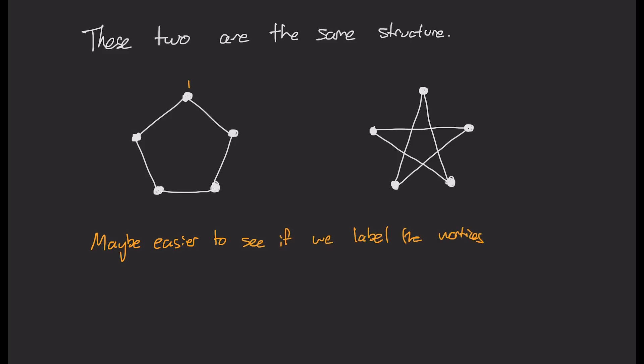So I'm going to label the left one in a clockwise fashion, so 1, 2, 3, 4, 5. But instead of labeling the right one in a clockwise way, I'm going to go and follow the path. So if we follow these paths around, we see that we actually get the exact same structure. So even though they look different, they encode the same information.